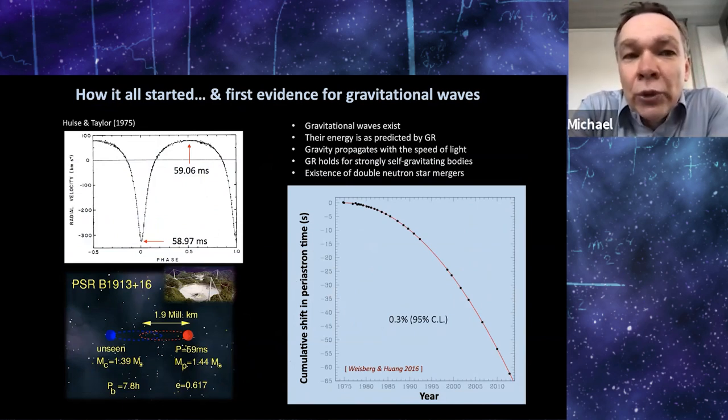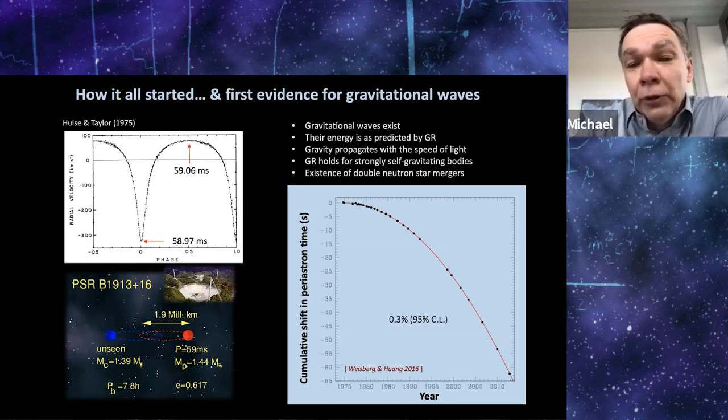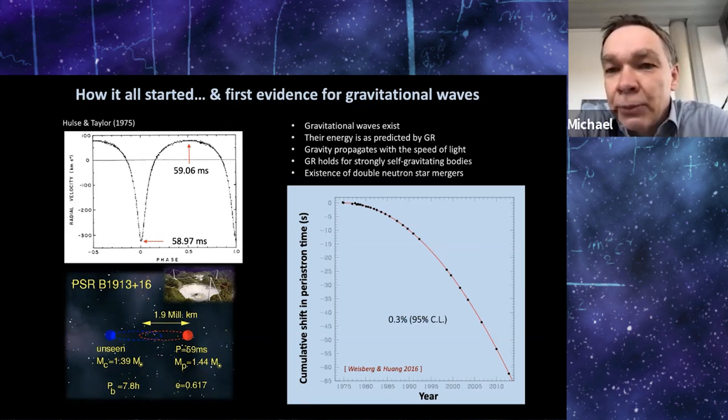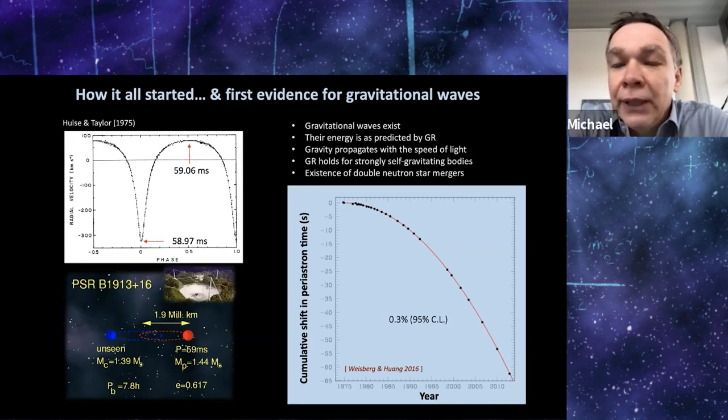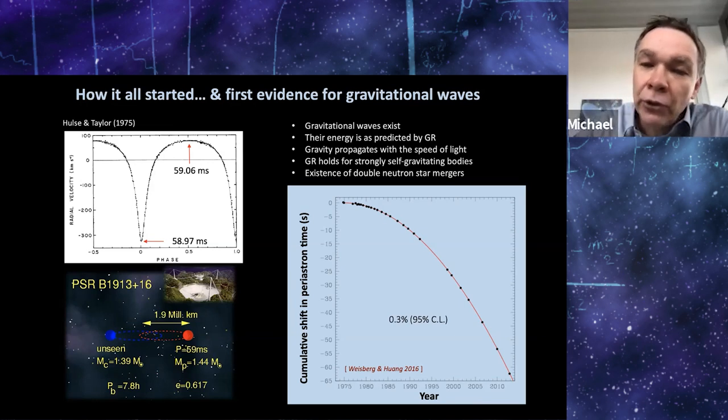Of course, the first time that it was possible was with the Hulse-Taylor pulsar, as I already mentioned, discovered in 1974. The paper came out in 1975. And I think here's the beautiful parabola plot in the latest version that is published by Joel Weisberg, who of course also contributed enormously to exploitation of the system. And the system already showed that gravitational waves exists. It showed that the energy loss is as predicted by GR. It showed that the gravity propagates with the speed of light. It certainly also showed that GR holds in strong self-gravity in the bodies. And it was, of course, a forecast of what happened, that neutron star mergers would exist, and therefore was a good motivation to build gravitational wave detectors. So that's how it all started.